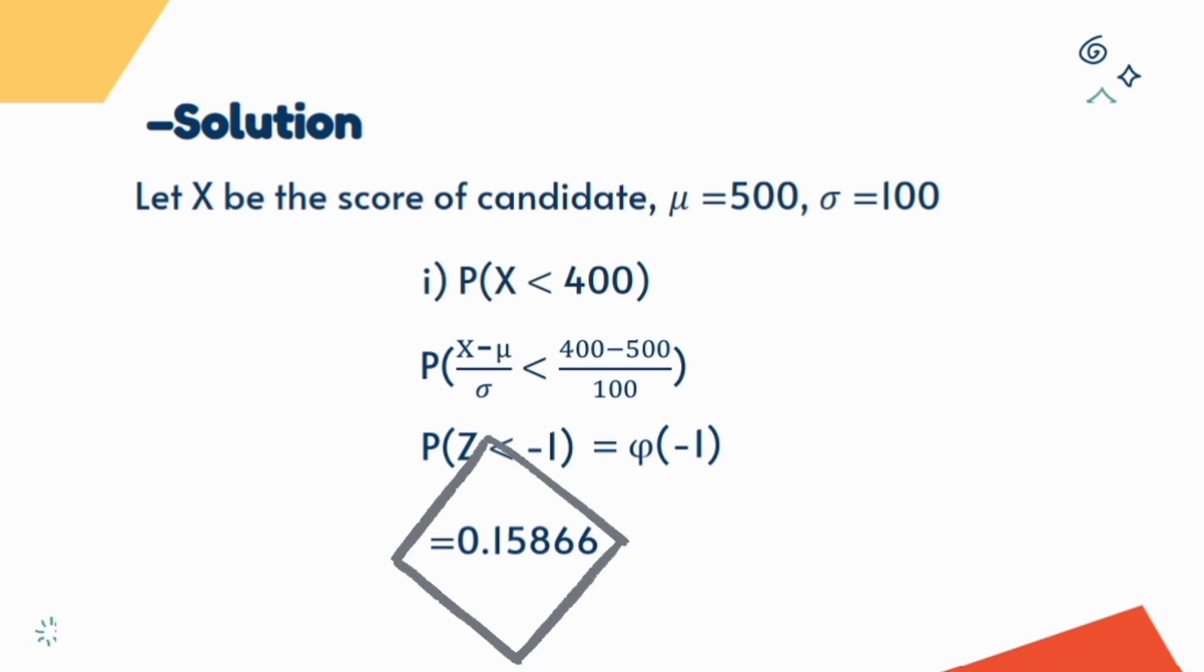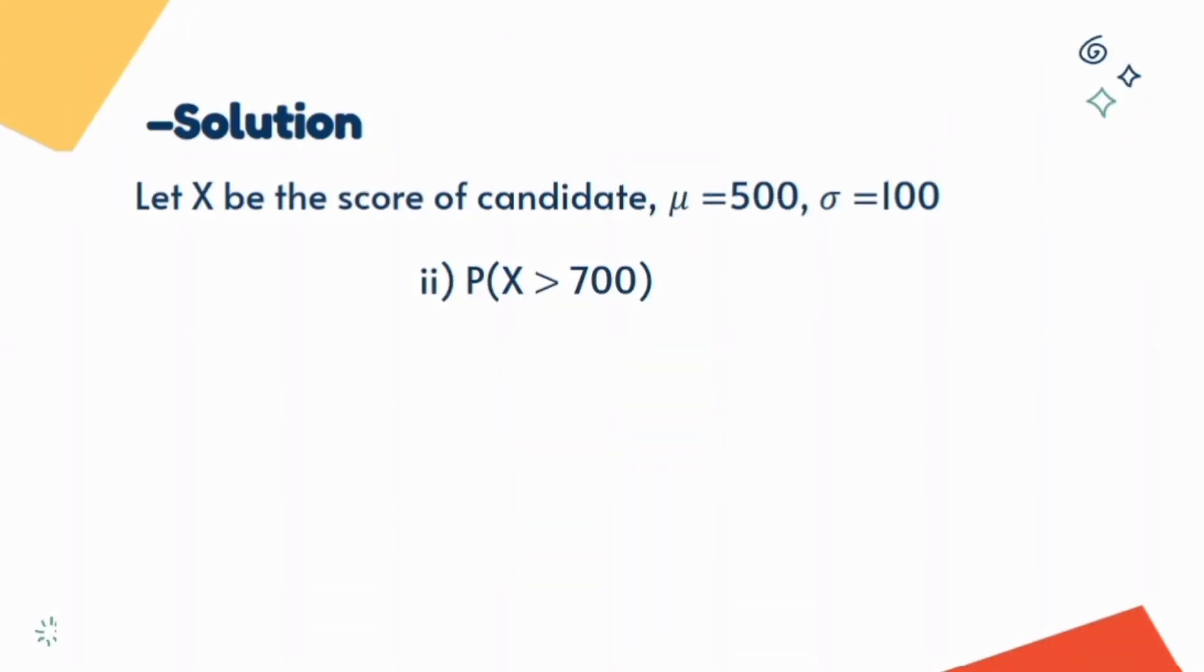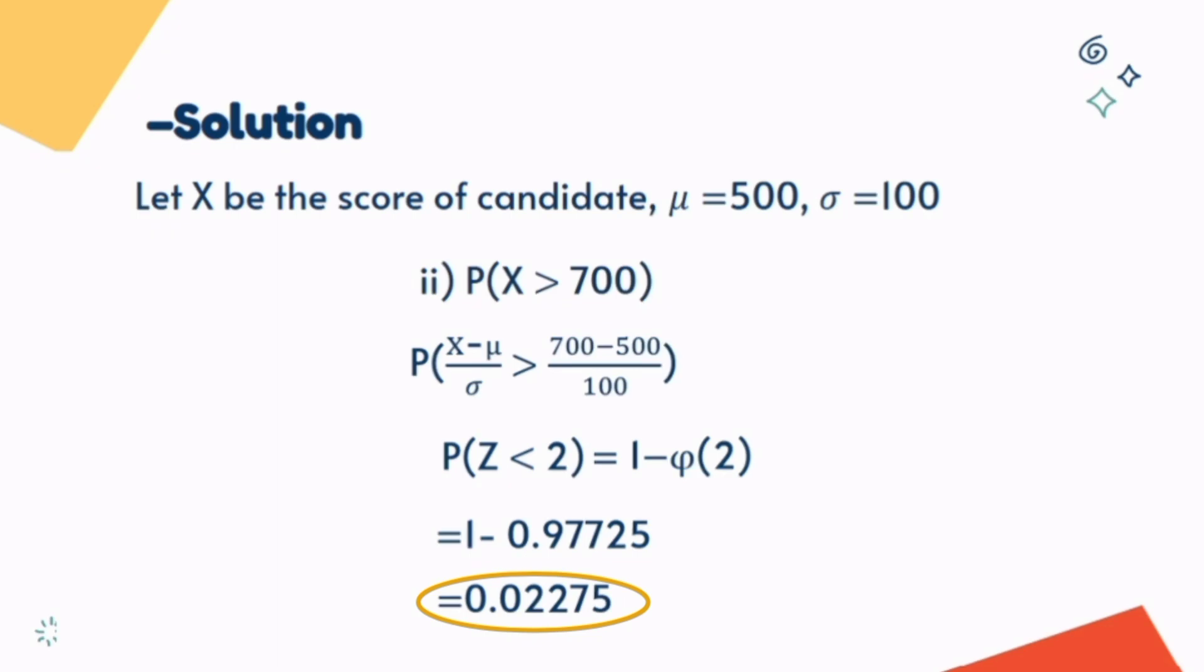It means about 16 percent chance to get less than 400 marks. In second question we check the probability of more than 700 marks. Again transform it to standard normal random variable. After transformation it looks like it is a case number two. Here we subtract table value from one. The final result tells us just more than two percent chance of getting more than 700 marks.